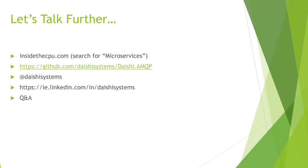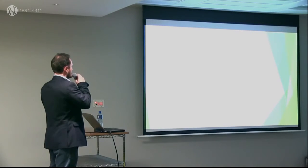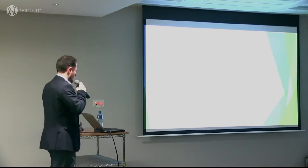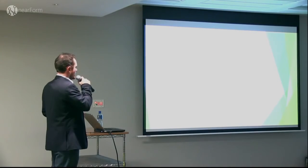Just to wrap things up: my name's Paul Mooney, I work at Ryanair. My blog is insidethecpu.com — I've blogged about microservices extensively there. Search for microservices, there's a half dozen or so articles. There's also Visual Studio Magazine which has a couple of articles. My Twitter handle is @issuesystems.me, and my GitHub profile has a library called AMQP for C-sharp. I'll be around for a bit after this if anyone's interested in chatting.